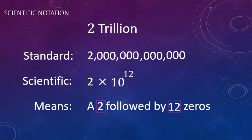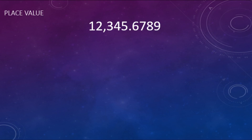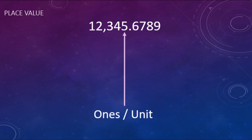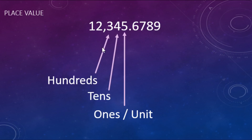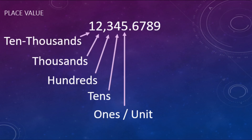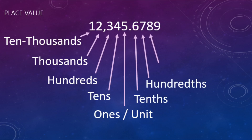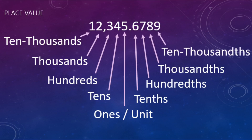In order to be good at this, we need to remind ourselves what place value is. The number just to the left of the decimal is your ones or unit place value. To the left of that, tens; then hundreds; then two thousand; then ten thousands. Going to the right of the decimal: tenths, hundredths, thousandths, and ten-thousandths.